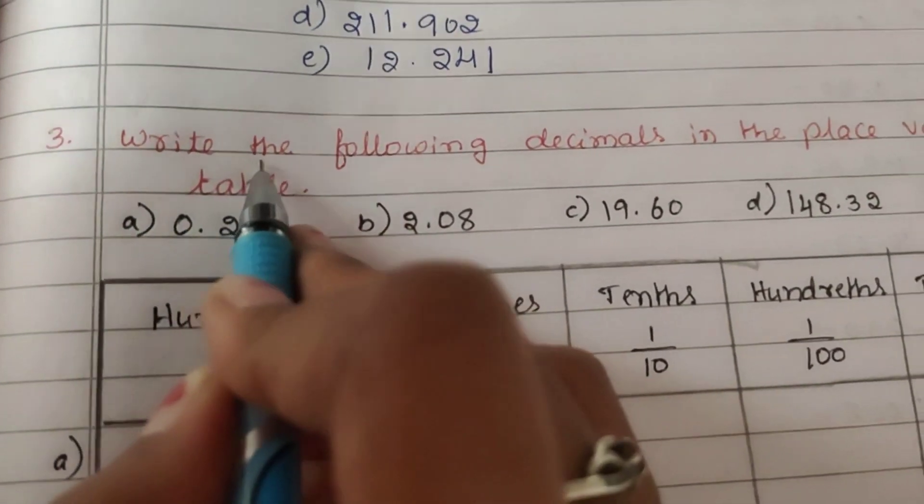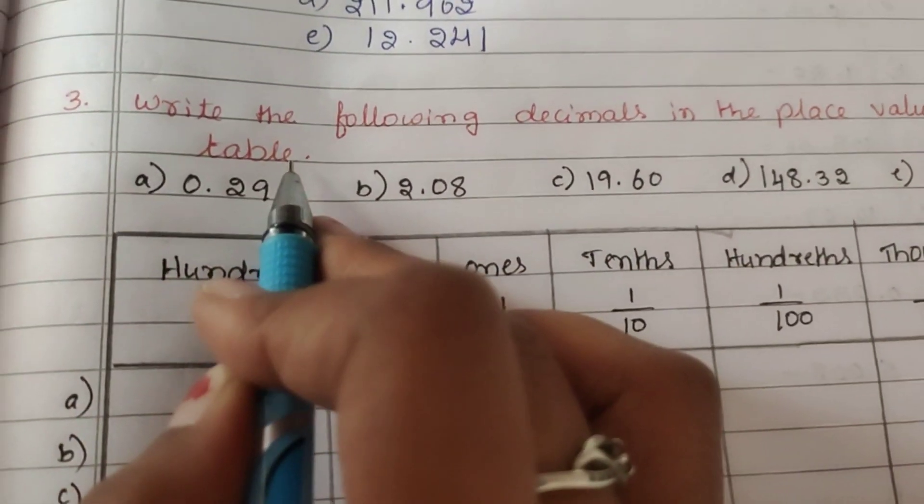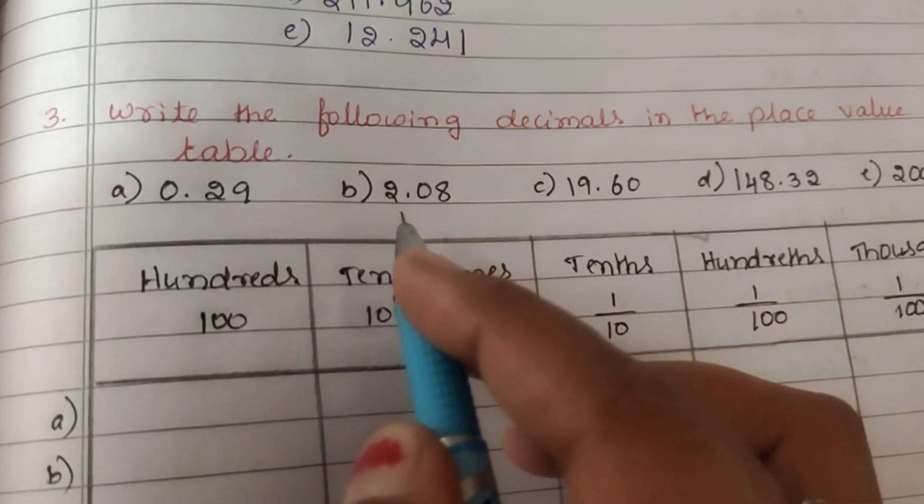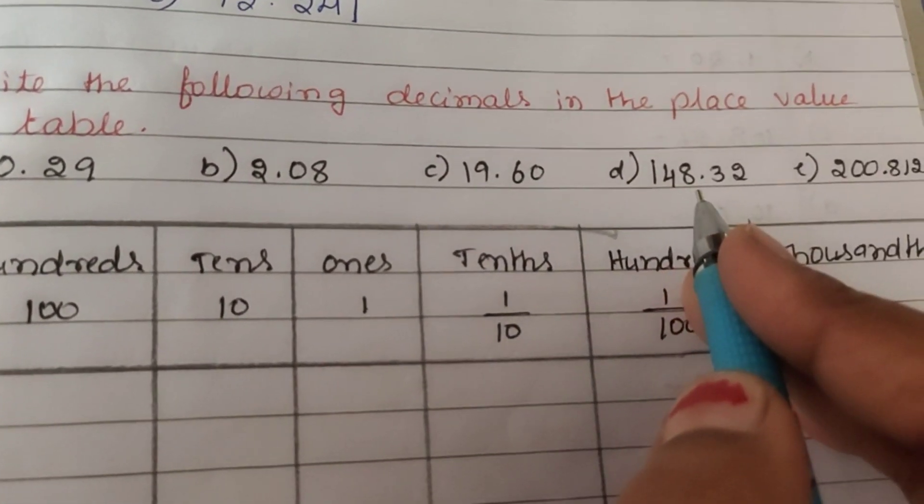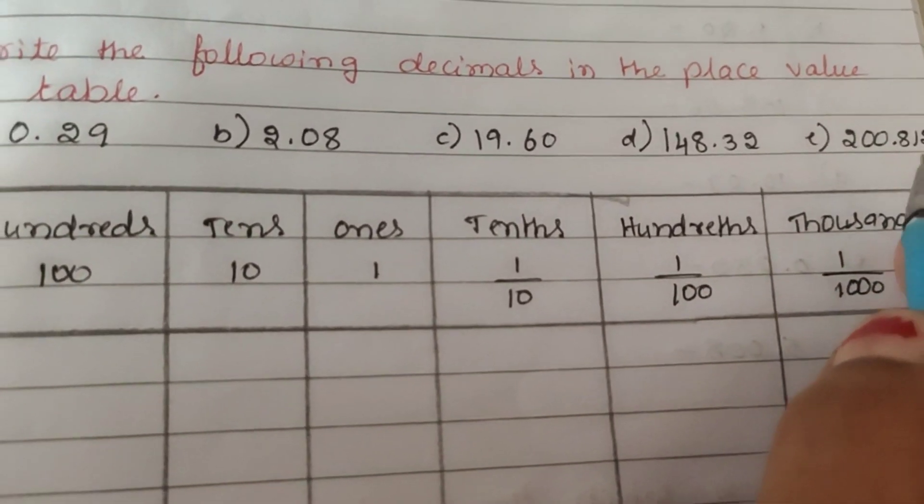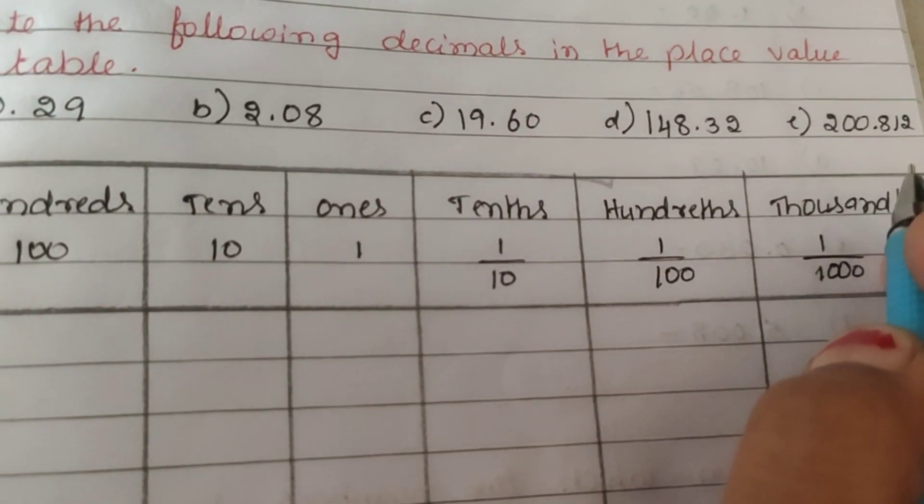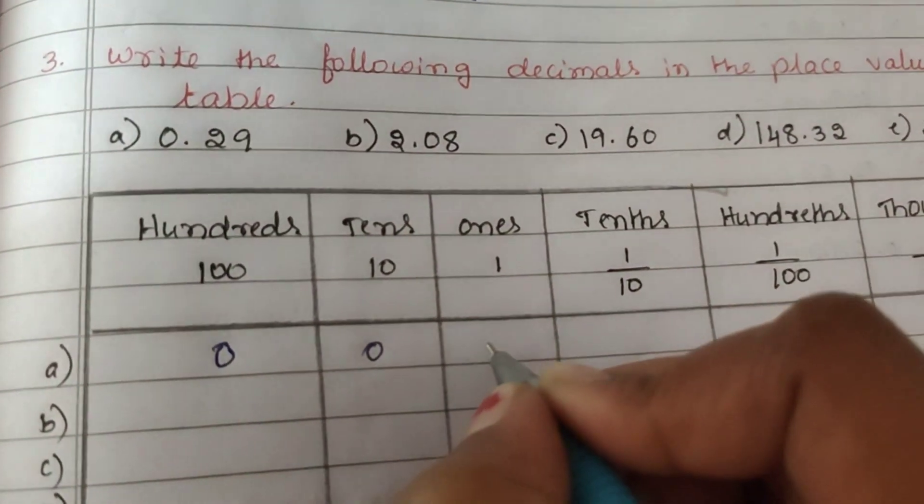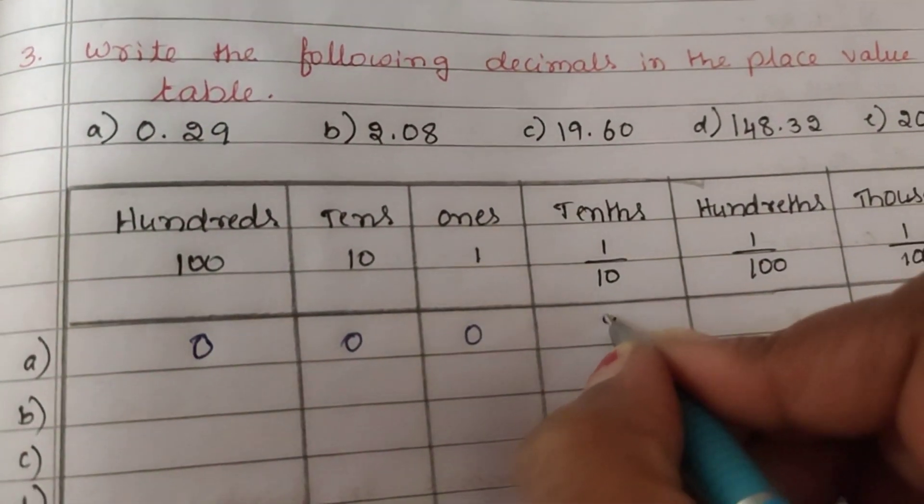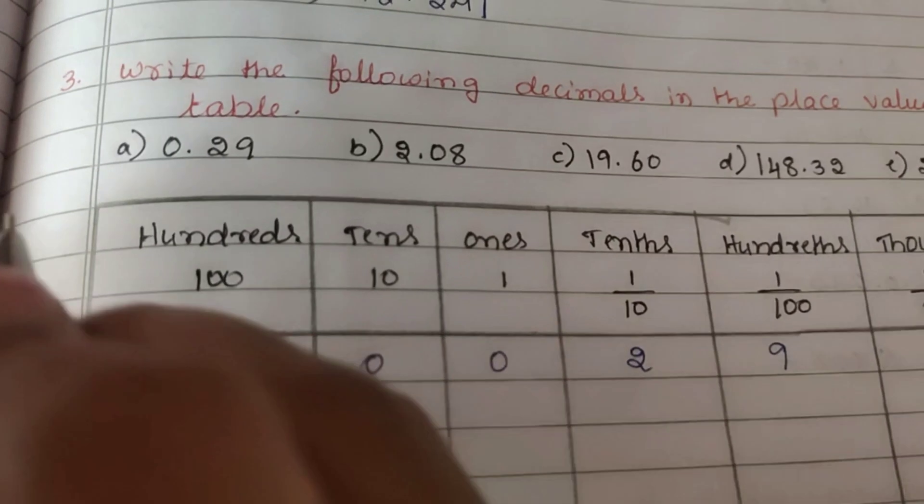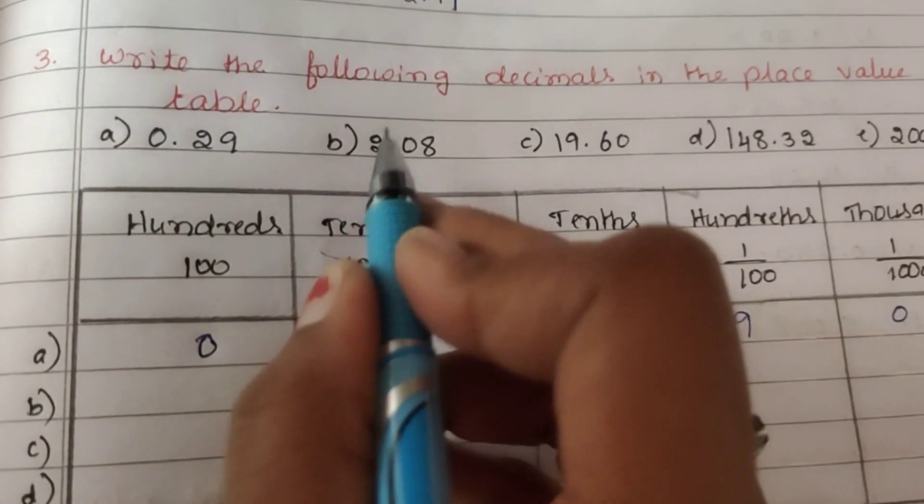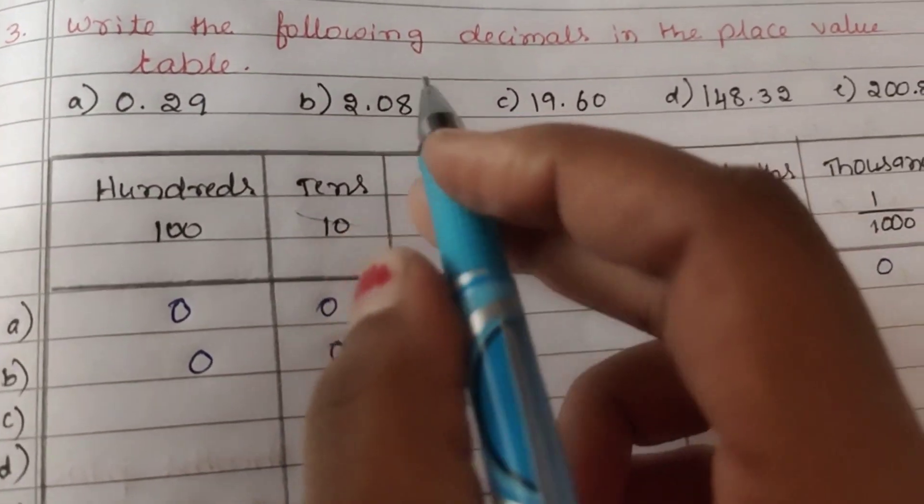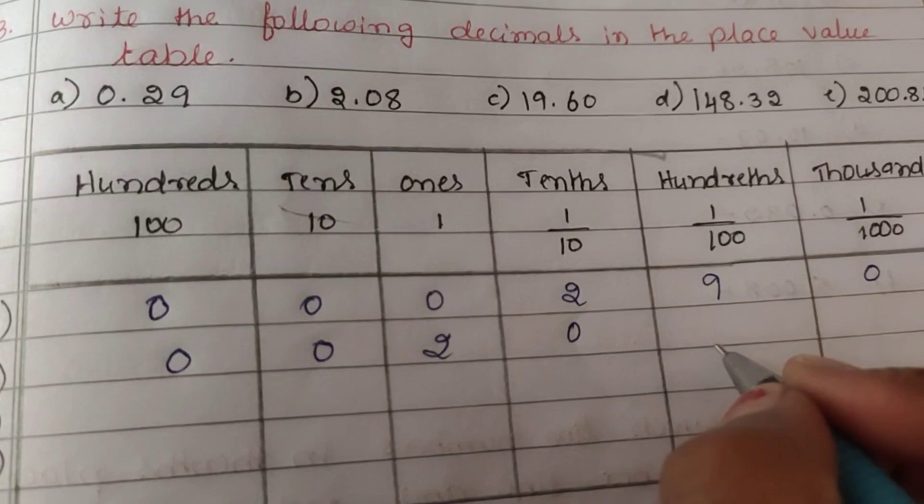Third question: write the following decimals in the place value table. Here are numbers: 0.29, 2.80, 19.60, 148.30, 200.812. The table has tenths place, hundredths place, thousandths place. For 0.29: hundreds, tens, ones are all 0. Tenths is 2, hundredths is 9, thousandths is 0.